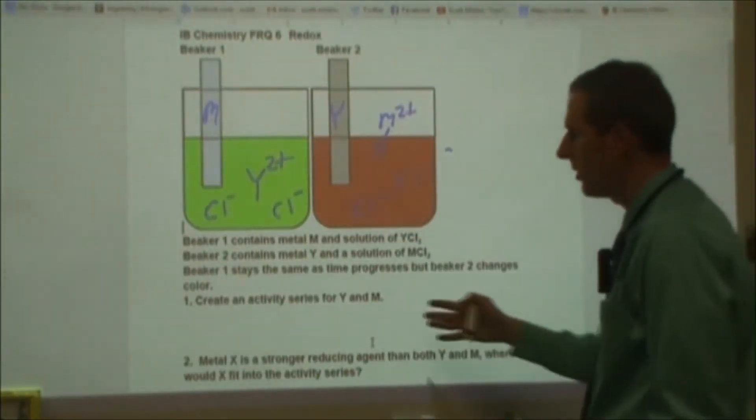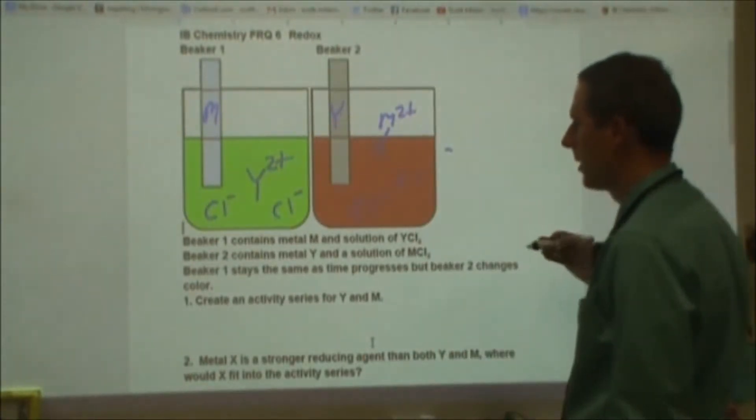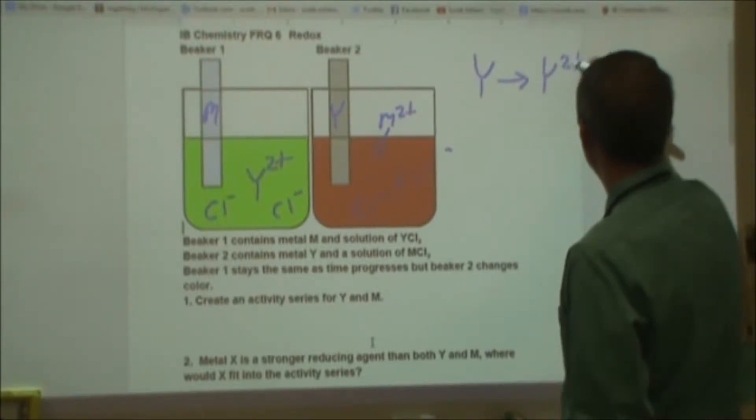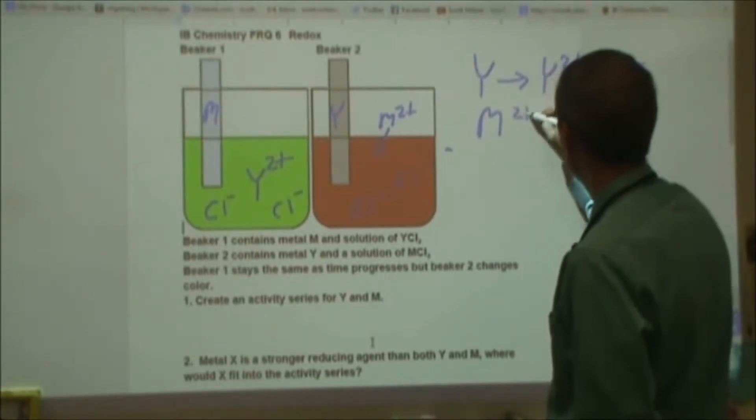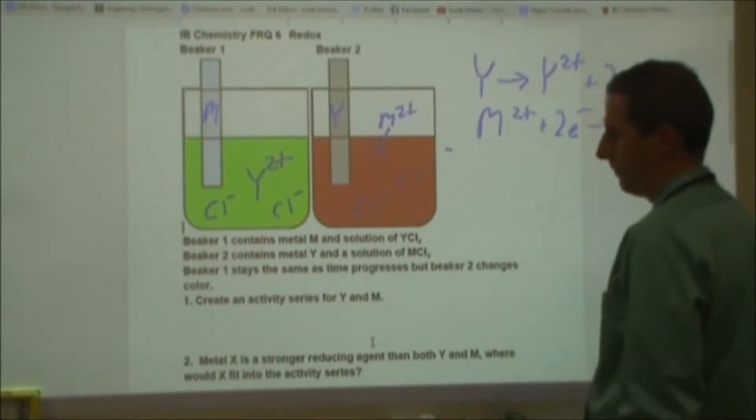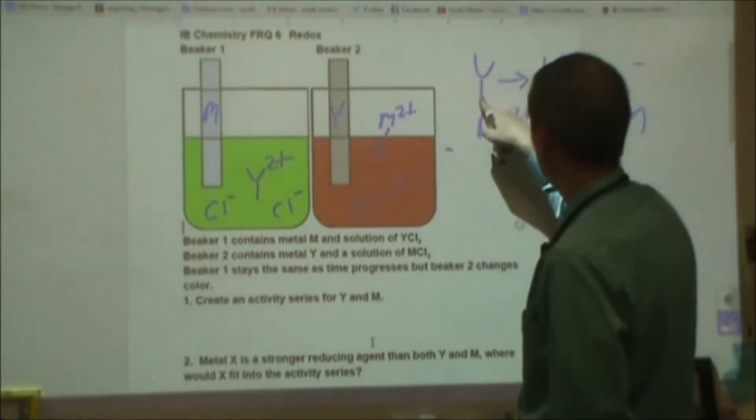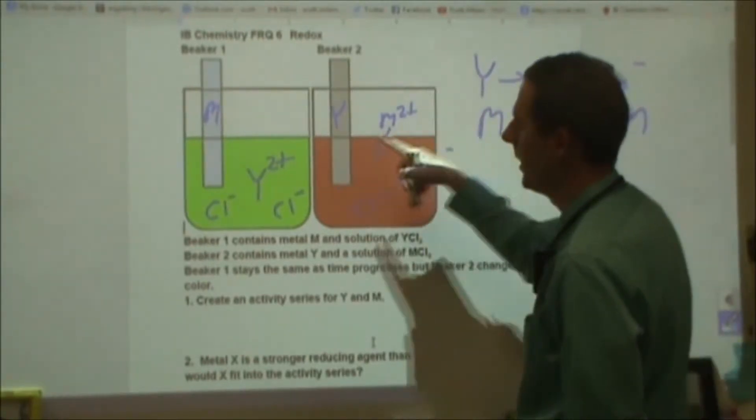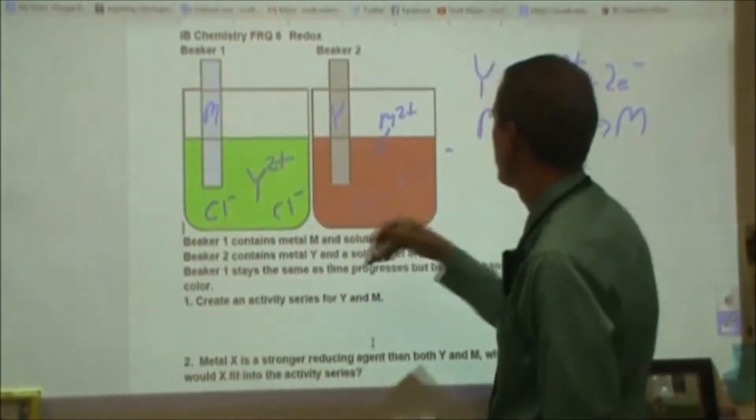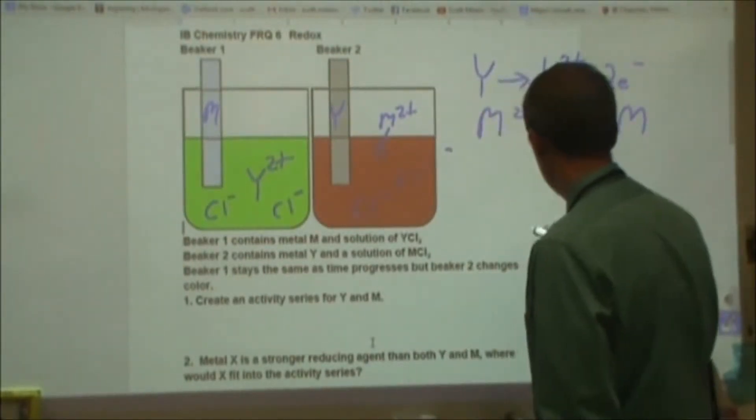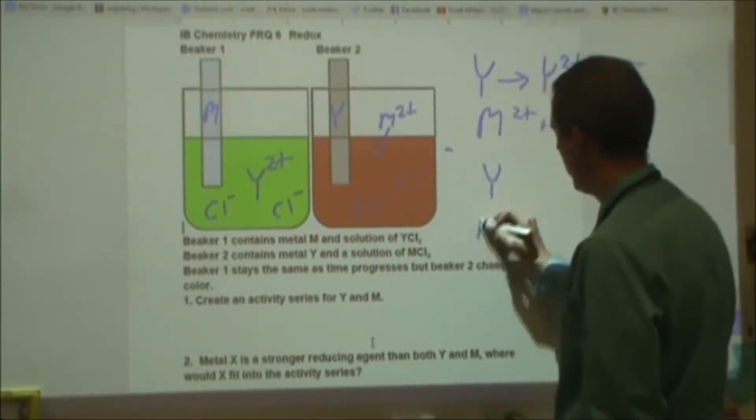It says create an activity series for Y and M. So in beaker 2 what we have happening is Y is oxidizing, it's turning into Y2+ and it's giving up two electrons and the M2+ on the other side is taking those two electrons and becoming M metal. So what that tells us then is that Y is reactive as a metal and that M does not react as a metal. So for creating an activity series what we would do is we would have Y on top and then M below.